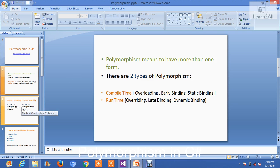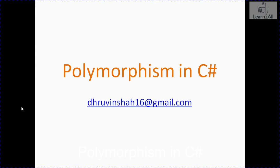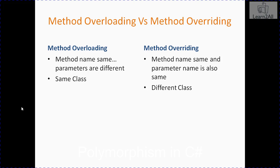Let's see a brief overview. What is the difference between method overloading and method overriding? In method overloading, the method name is the same, parameters are different, and they are in the same class. But in method overriding, method names are the same and parameter names are also the same, but they are in different classes. I have shown you both solutions practically — how to perform method overloading and method overriding.